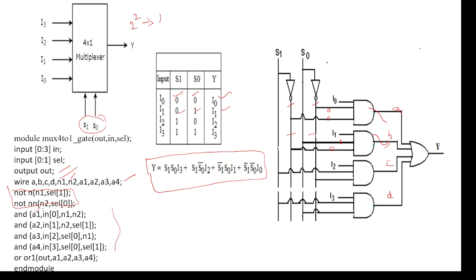There are 4 AND gates. A1 is the output of the first AND gate. A2 is an output with inputs N0 and N1, N2. A3 is the next output with its corresponding inputs. The 4th AND gate is written similarly. Finally, we write the OR gate code — the OR gate output takes inputs A1, A2, A3, A4. These A1 through A4 are the wires declared earlier.